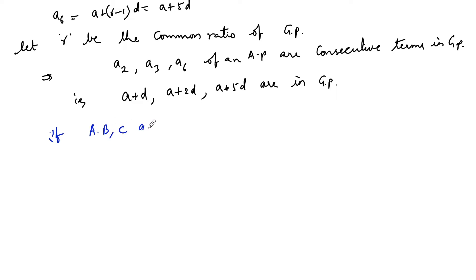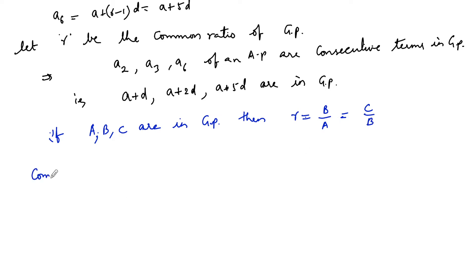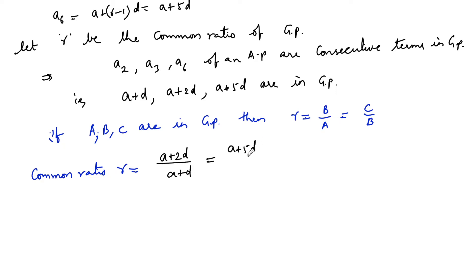We know that if a, b, c are in geometric progression, then the common ratio r = b/a = c/b. So the common ratio r equals (a + 2d)/(a + d), which must equal (a + 5d)/(a + 2d), since the terms are consecutive.